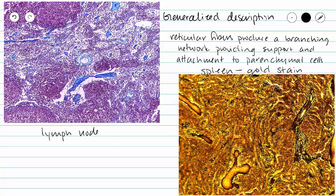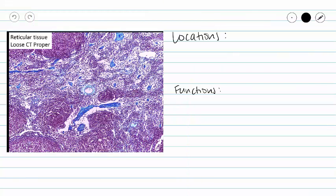Let's look at the details of our reticular tissue in specific. We find reticular tissue in our lymph nodes, which is what we see in this picture to the left. We also find reticular tissue in our spleen, which was our gold stain slide. Reticular tissue also supports the structure of our thymus and our bone marrow.